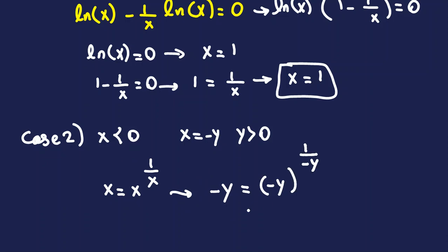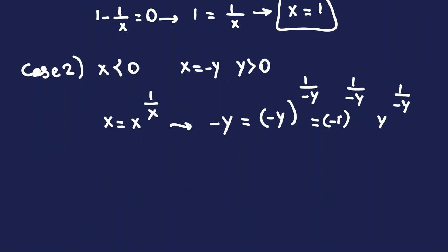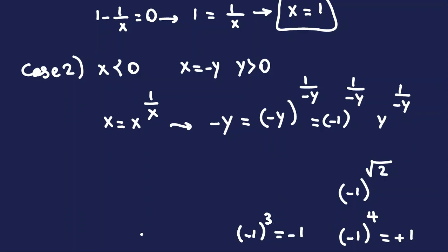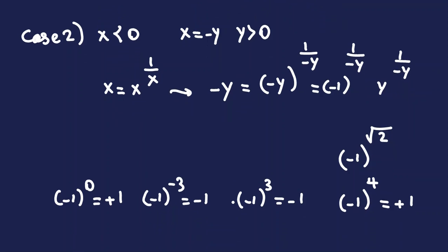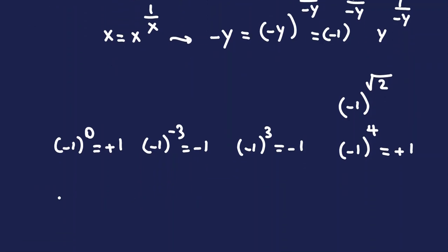We can split (−y)^(1/(−y)) into (−1)^(1/(−y)) · y^(1/(−y)). Now, (−1) raised to a real power: for integers it's clear — (−1)^4 = 1, (−1)^3 = −1, (−1)^(−3) = −1, and (−1)^0 = 1. The sign depends only on whether the exponent is even or odd.